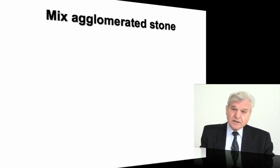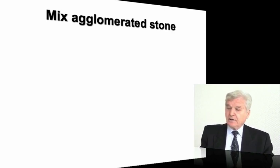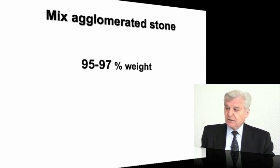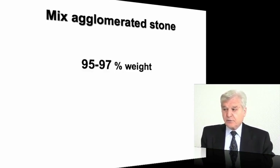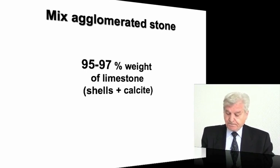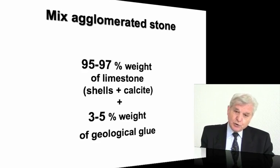In the case of the Giza material, we have an agglomerated stone that is a mixture of 95 to 97 percent by weight of limestone — shells, fossil shells and calcite — to which we add 3 to 5 percent by weight of a geological glue that is a geopolymer.